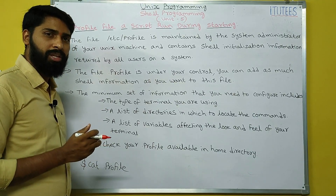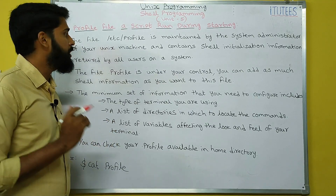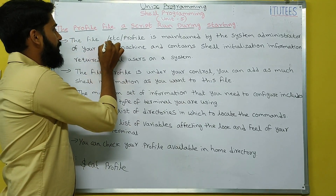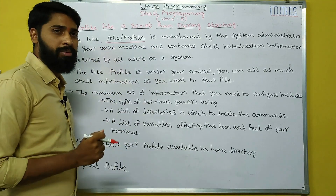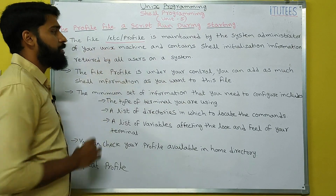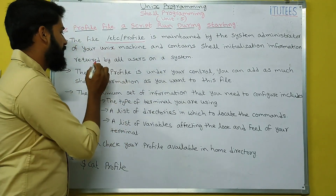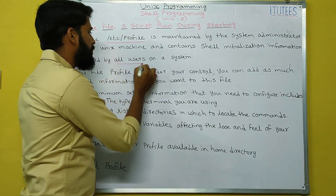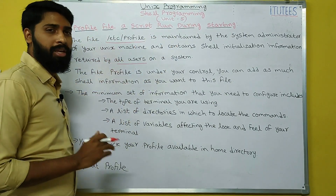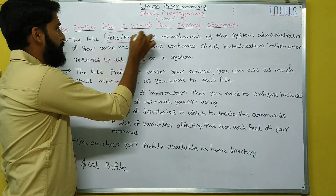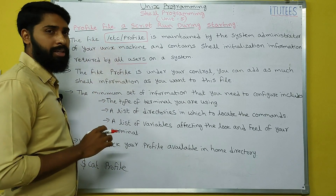We have two types of files: one is the profile file and another is the dot profile file. The first one, the file at /etc/profile, is maintained by the system administrator of your Unix machine and contains shell initialization information required by all users on the system. The administrator maintains this profile file in the /etc directory.